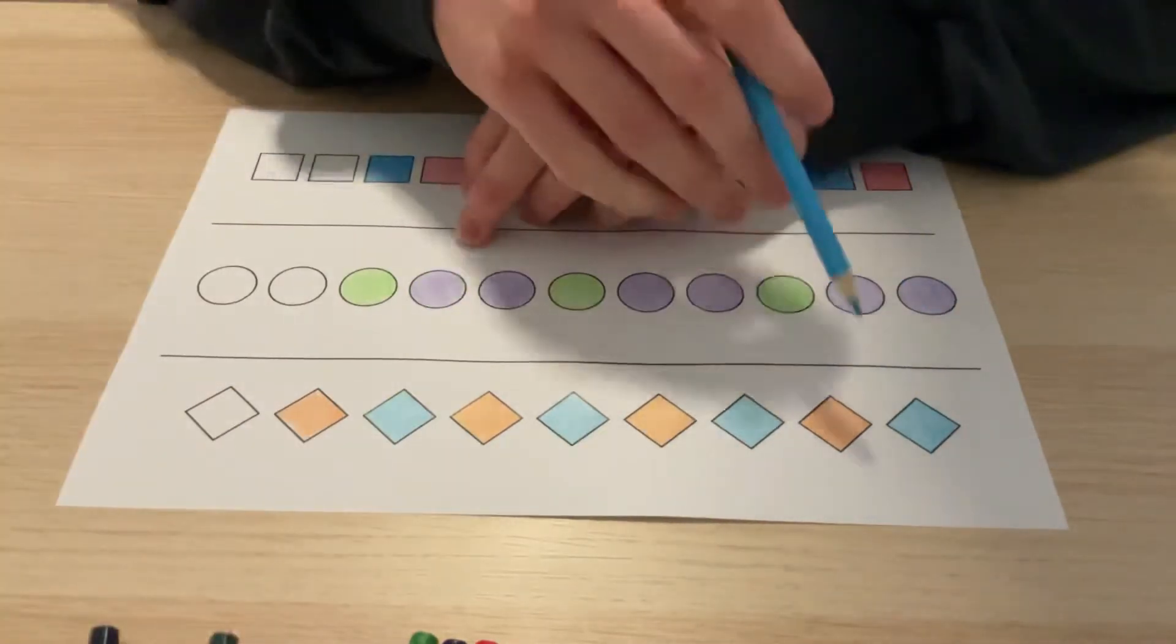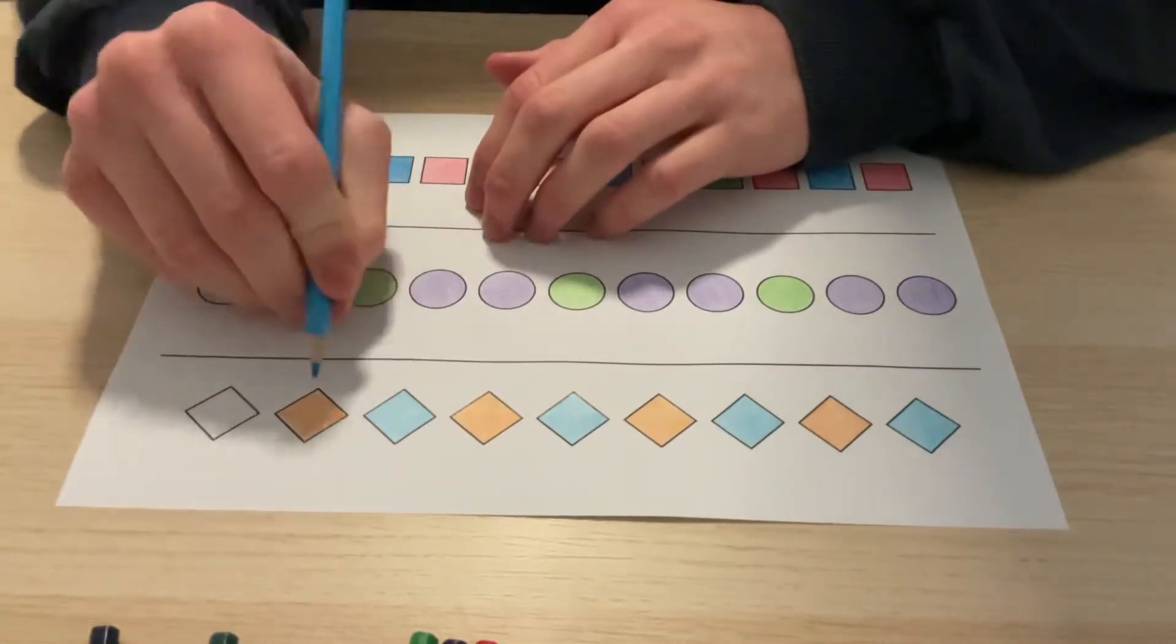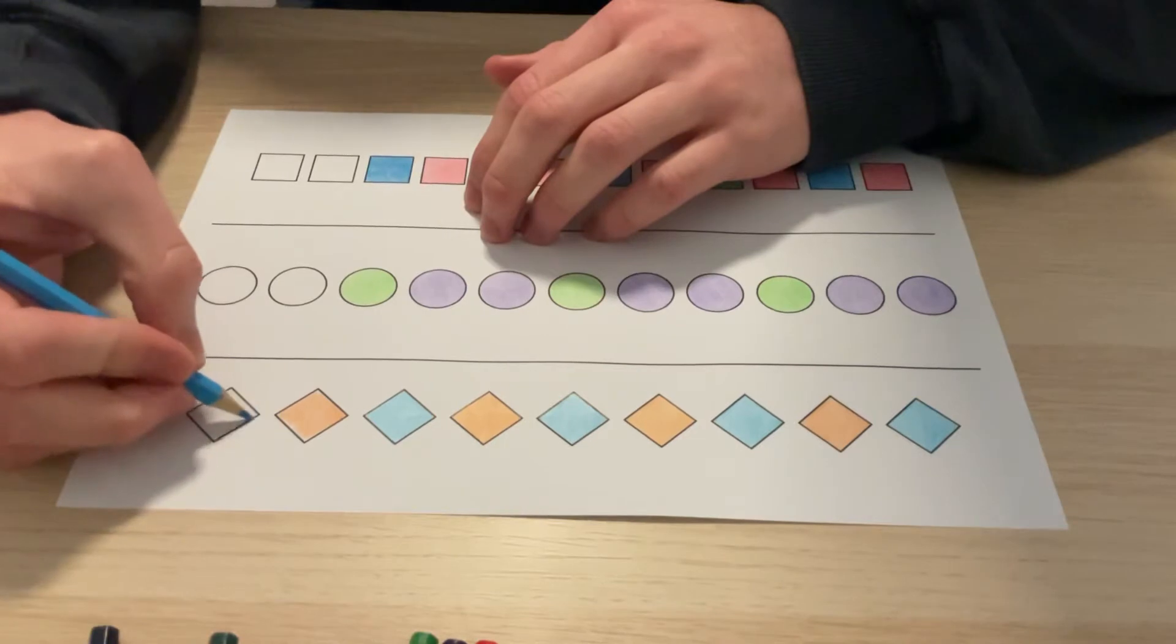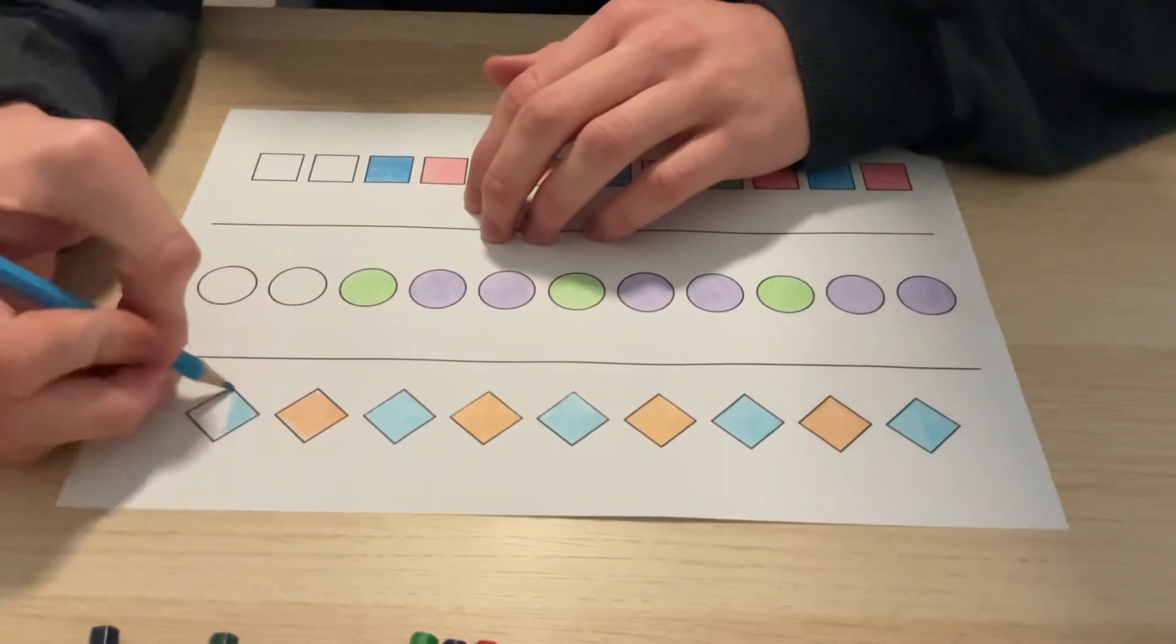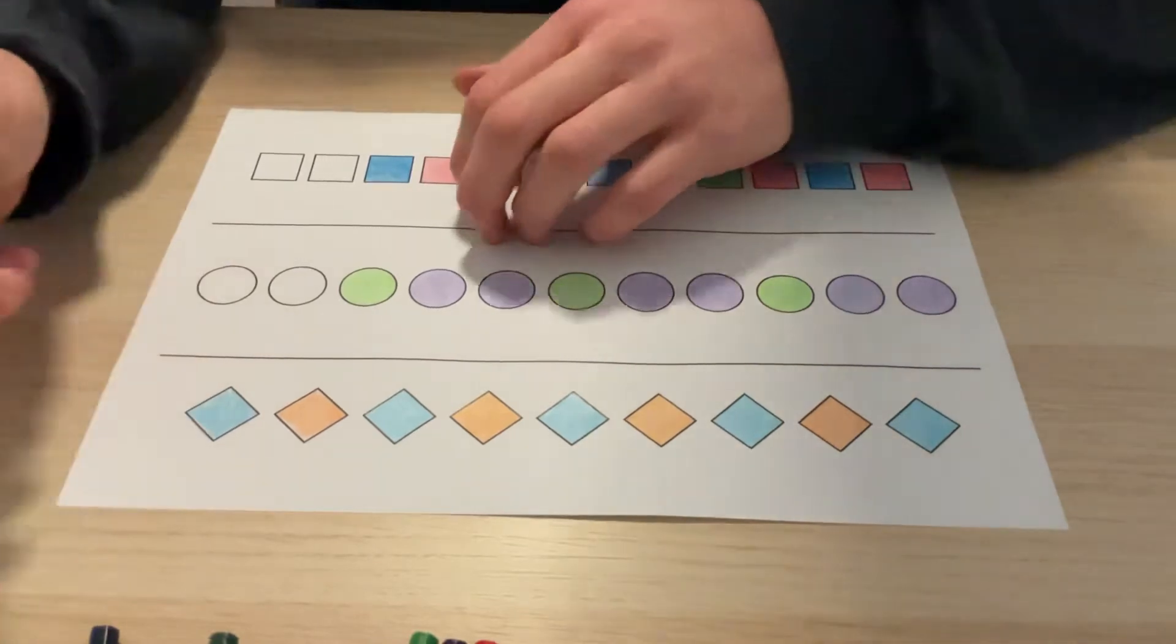And then for our last one, we won't be able to fit in the whole blue-orange sequence, so we'll just have to start with the blue one because it's orange here. So the next one will be blue, and then if we had more diamonds we would color the next one in orange, but just for this one it's only a little one, we can stop that one there.